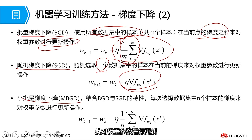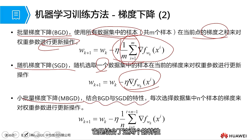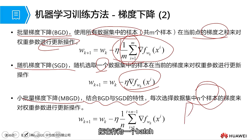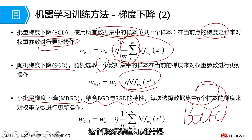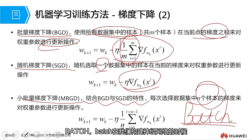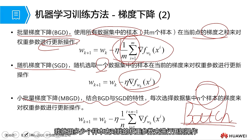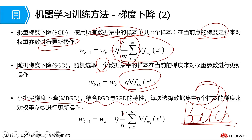Stochastic gradient descent: as long as there is one sample point, it updates the weight parameters. Mini-batch gradient descent combines the characteristics of both: the former two are a bit too extreme — either take all samples or take just one. Mini-batch gradient descent takes n samples as a batch. Everyone should remember this concept of 'batch' — when we are building neural networks, batch is a very important hyperparameter. You just set how many samples in a batch to perform a weight update operation.